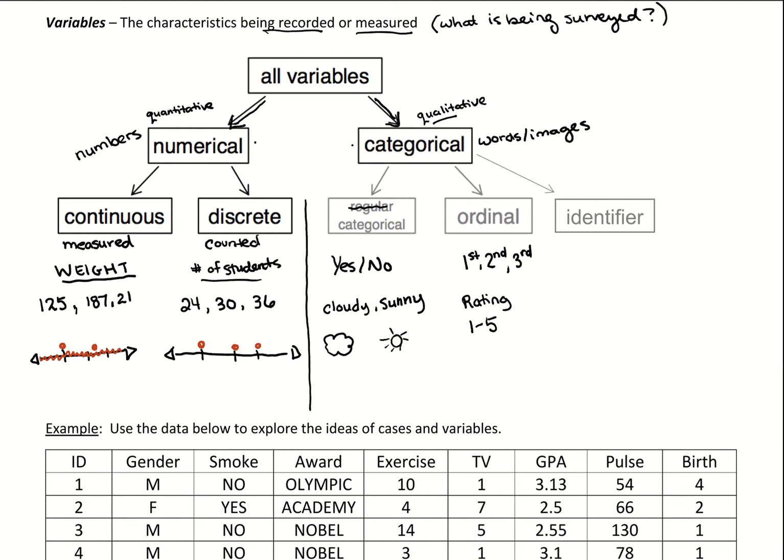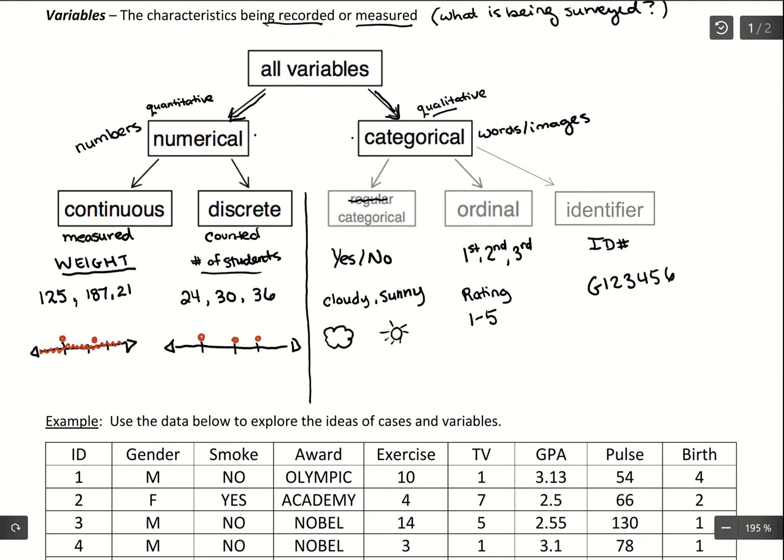And then the identifier is a special case. It's usually an ID number that's given by the researchers, or it could be something like your G number, so G123456, or just listed identifier numbers. It's not really a characteristic of the person or the thing that we're surveying, but it could be listed in the data and we'd call it an identifier. So these are our two branches. When we get into our descriptions, we're really just going to focus on identifying something as numerical versus categorical, but these branches can go further with these other descriptions.